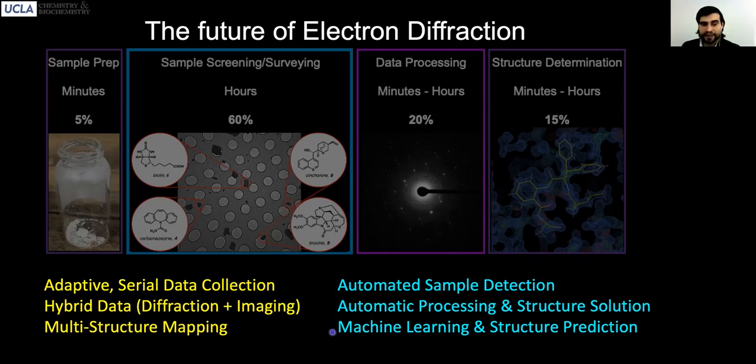This brings us to opportunities in computer science, machine learning, structure prediction, all very exciting and growing fields in the area of data science that are now integrated into much of modern electron microscopy.